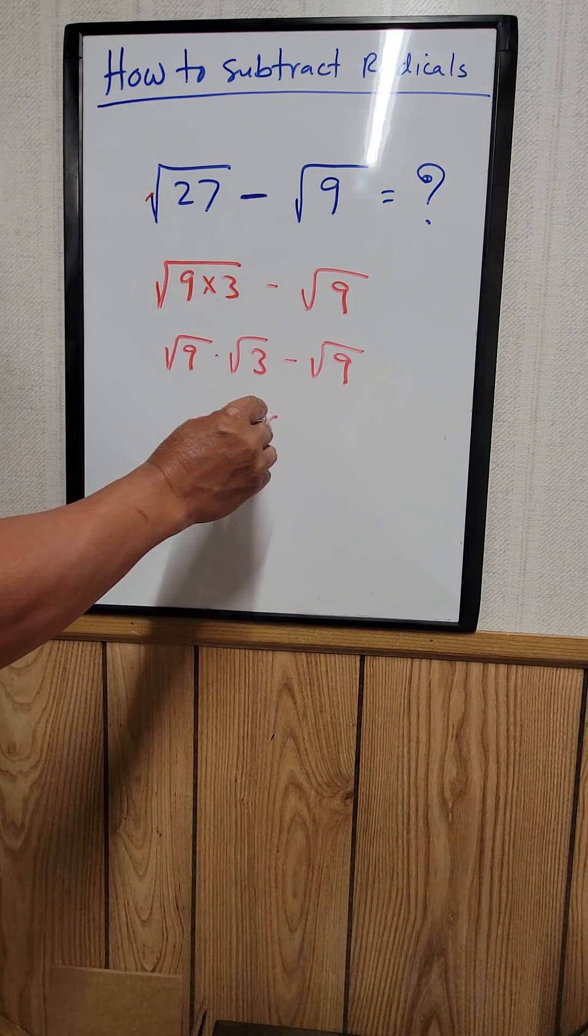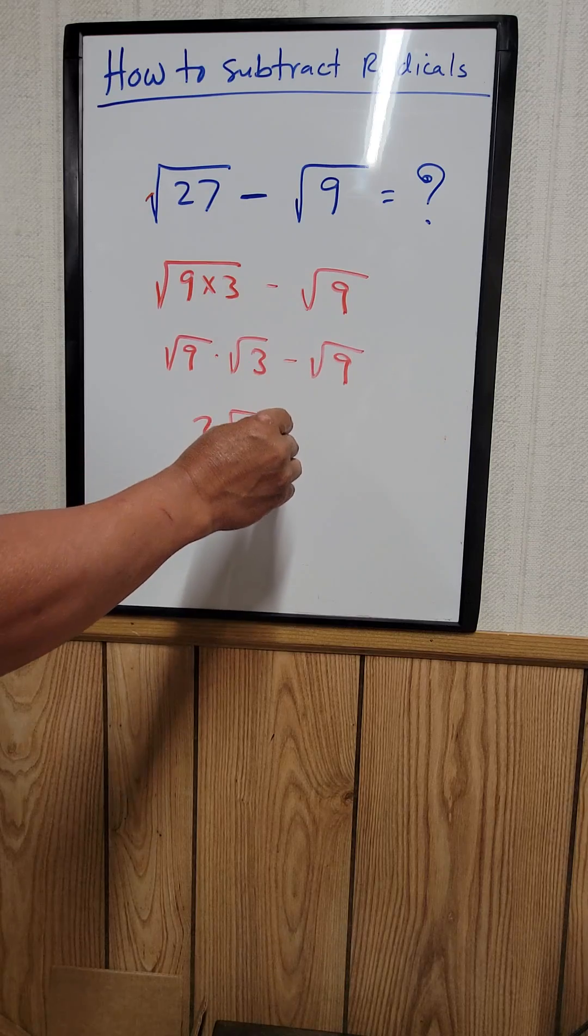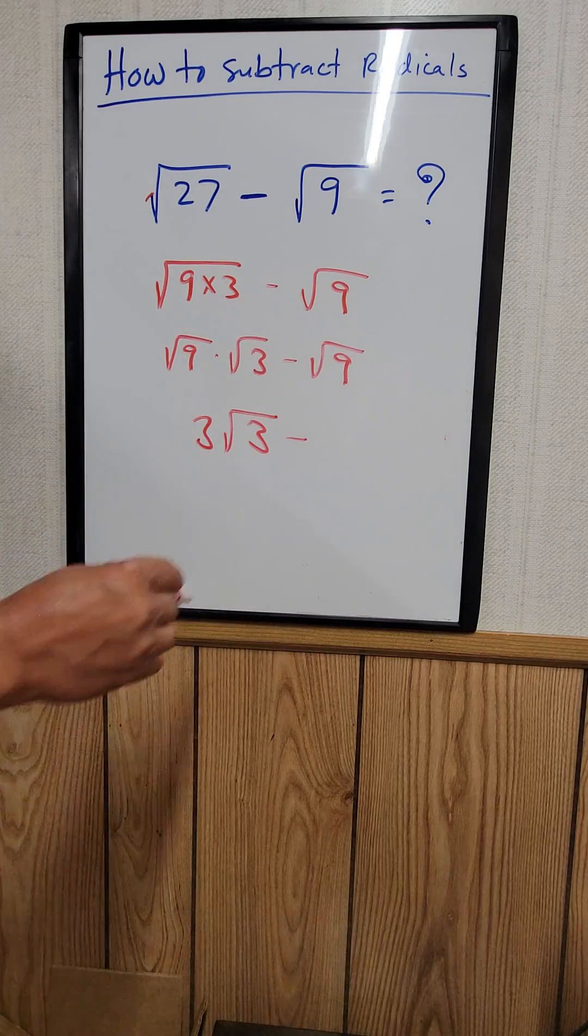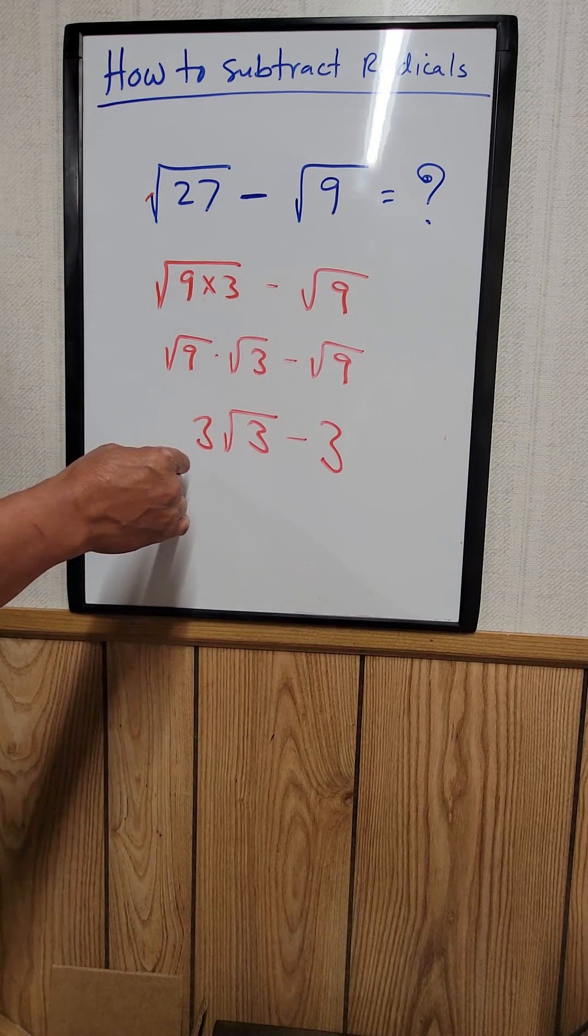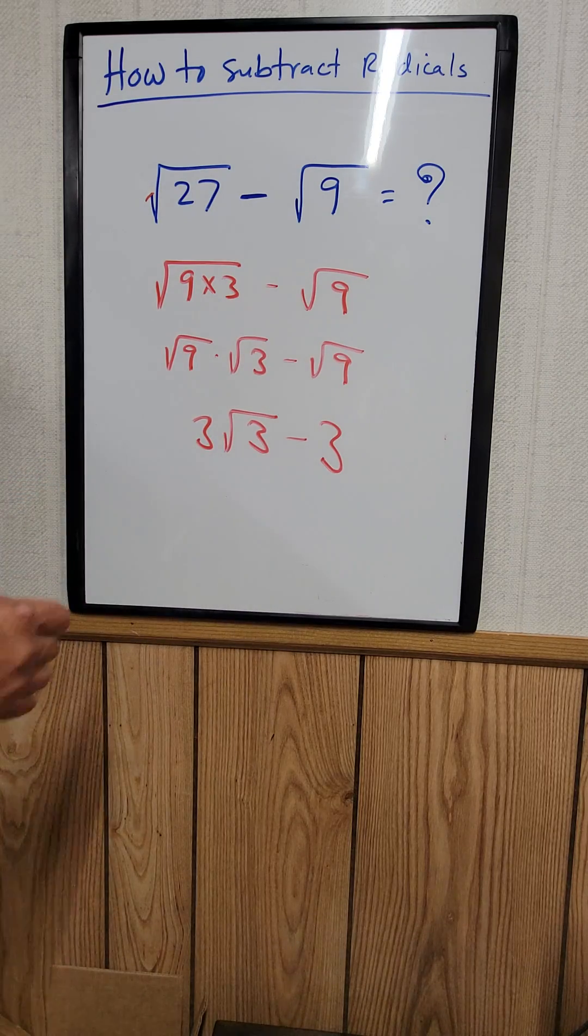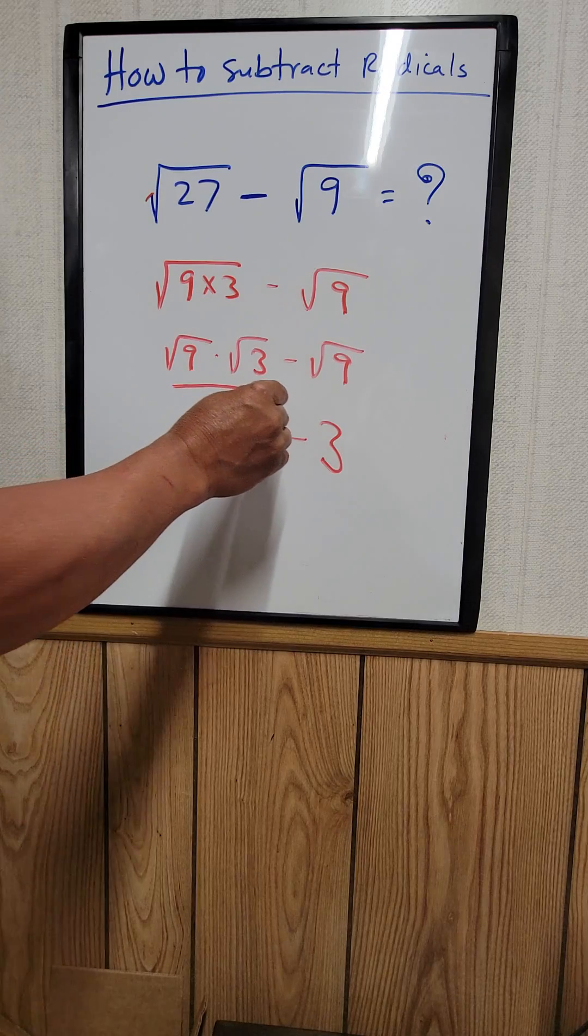So that's times the square root of 3. So minus the square root of 9 is just 3. Can you simplify any further? No. So this would be the answer right here.